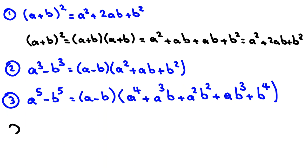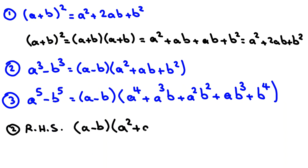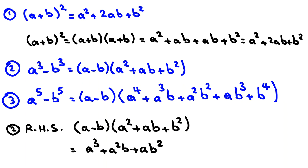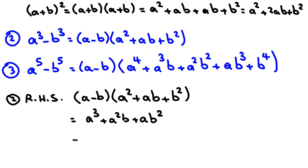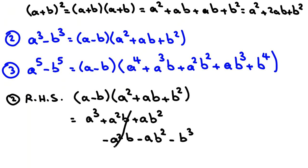Let's prove the second identity. Consider the right-hand side: (a minus b)(a squared plus ab plus b squared). Multiplying a by each term gives: a cubed, a squared·b, and a·b squared. Multiplying negative b by each term gives: negative a squared·b, negative a·b squared, and negative b cubed. The middle terms cancel, leaving a cubed minus b cubed, which is the left-hand side.